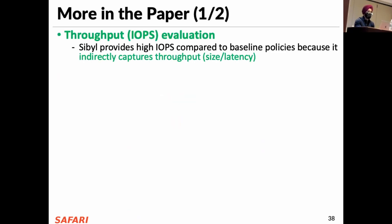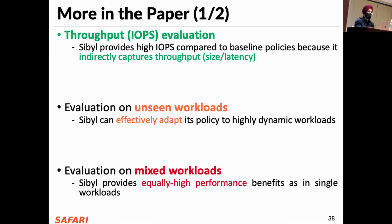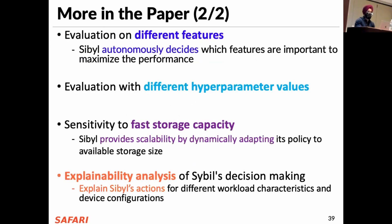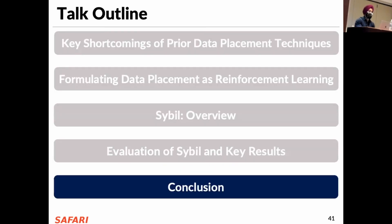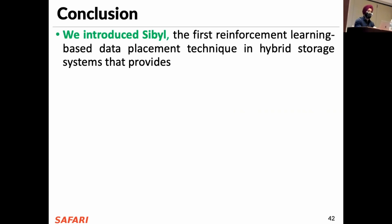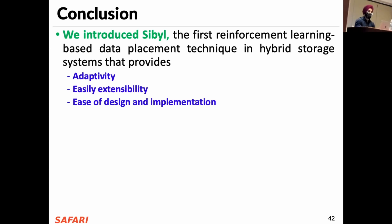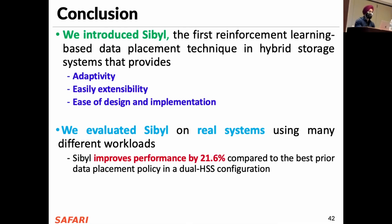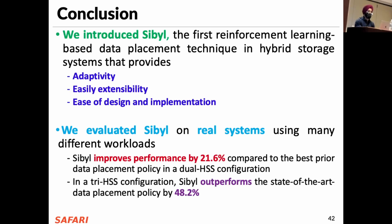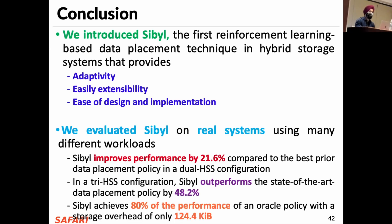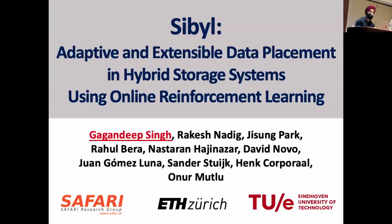We have many more exciting results in the paper, including throughput evaluation, evaluation on unseen workloads, and on mixed workloads as well. We introduced Sybil, the first reinforcement learning based data placement in hybrid storage systems providing adaptivity, easy extensibility, and ease of design and implementation. Sybil improves performance by 21.6% in a dual hybrid storage system and outperforms state-of-the-art by 48.2% in a tri-hybrid system, achieving 80% of Oracle performance with only 124.4 kilobytes of storage overhead. We will open source our code on GitHub. Thank you very much — I'll be happy to take any questions.